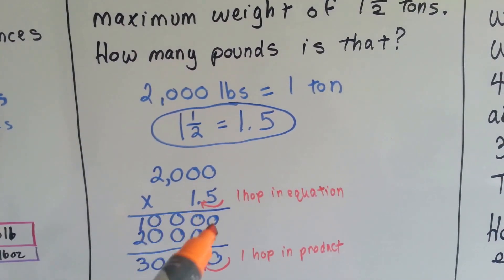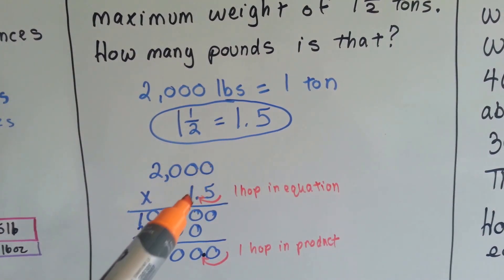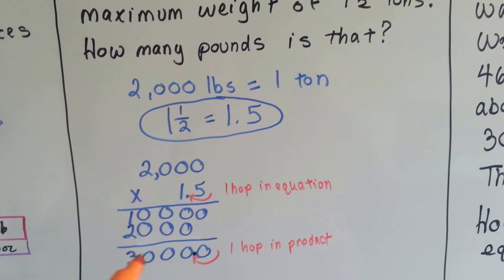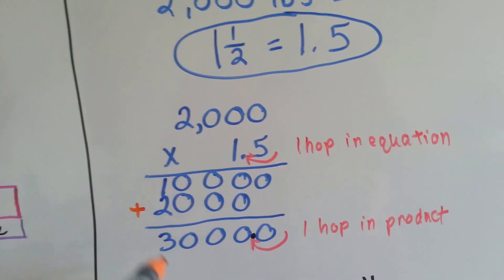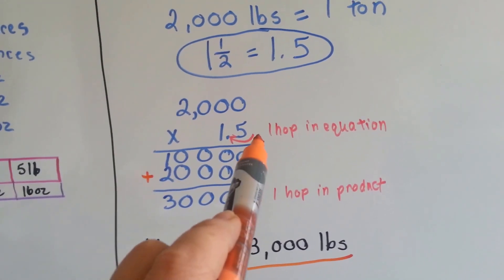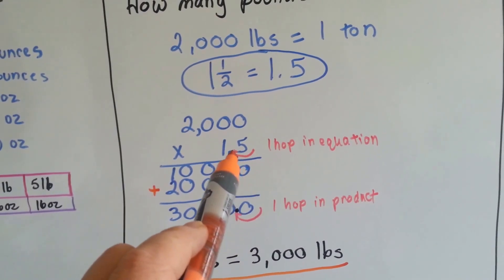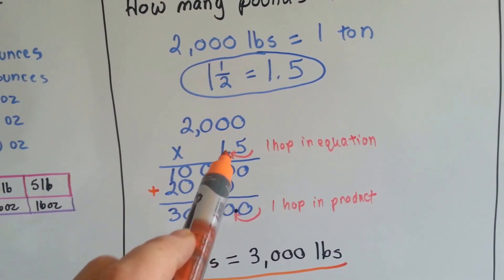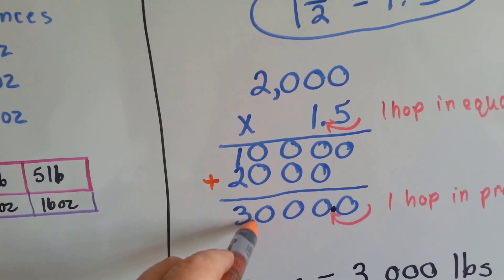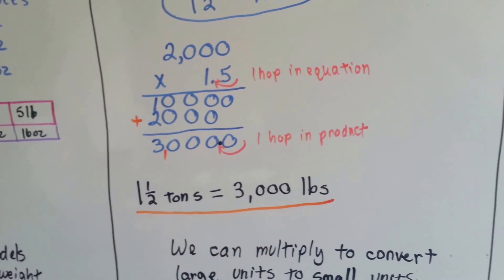We multiply the zeros, and then we multiply the 5 times the 2 and get 10. We multiply the 1 to the zeros, and then multiply the 1 to the 2. When we add them up, we get a 3 with 4 zeros. But knowing that there was 1 decimal point in the equation, that gives us 1 hop over for a decimal point that we put into the product. That gives us 3,000. So 1.5 tons is equal to 3,000 pounds.